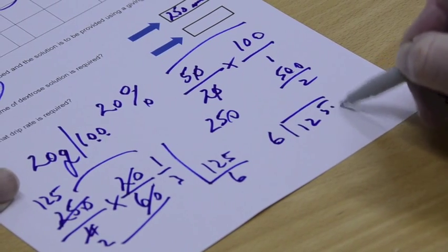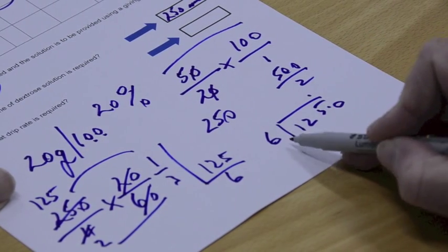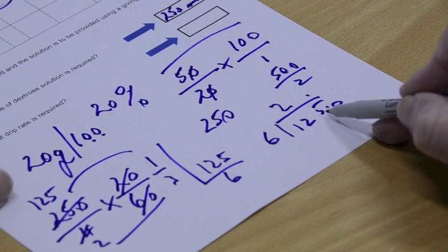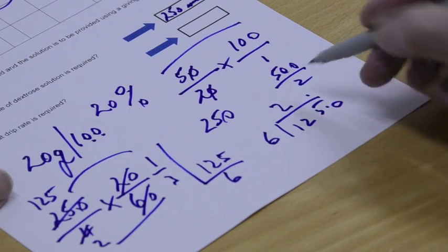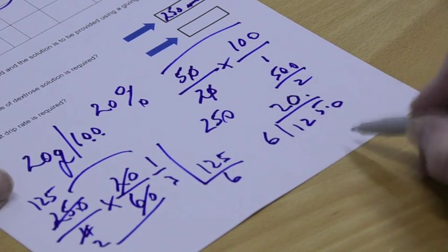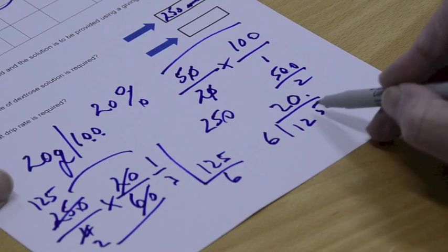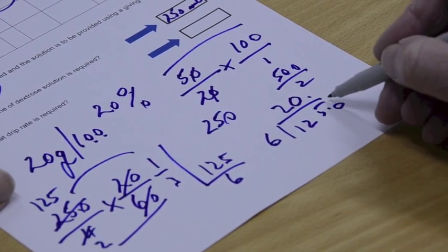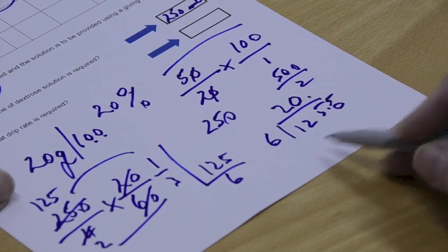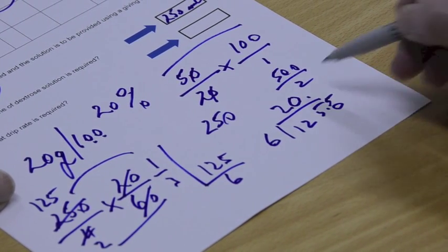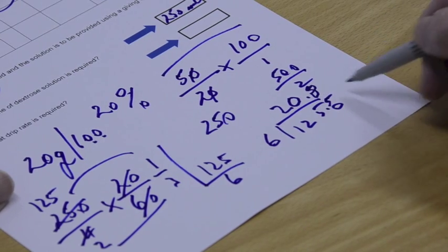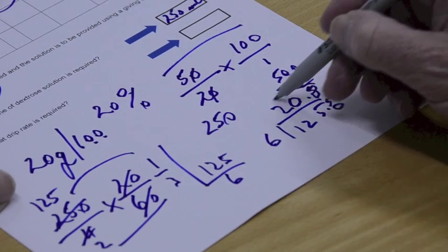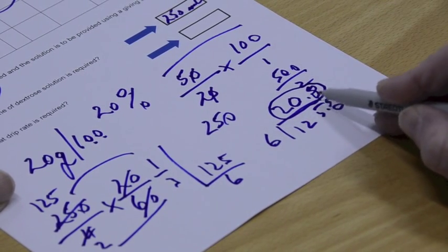125.0 I'm going to do again. 6 into 12, that's easy, is 2. 6 into 5, won't go. But don't forget to register that fact. Don't just move it on without thinking. That 5 is still there. So 6 into 5 won't go. So carry the 5 on. 6 into 50 is 8, so 48. With 2 over. But we don't need to go any further. There's our answer there. 20.8.